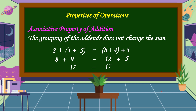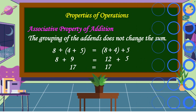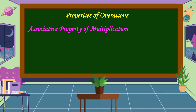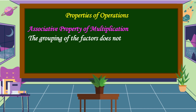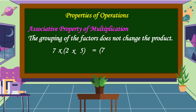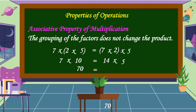Therefore, the grouping of the addends does not change the sum. The next property is the associative property of multiplication. This property states that the grouping of the factors does not change the product. For example, 7 times (2 times 5) is equal to (7 times 2) times 5. Let's check: 2 times 5 is equal to 10, and 7 times 2 is equal to 14. So 7 times 10 is equal to 70, and 14 times 5 is equal to 70 also. Therefore, the grouping of the factors does not change the product.